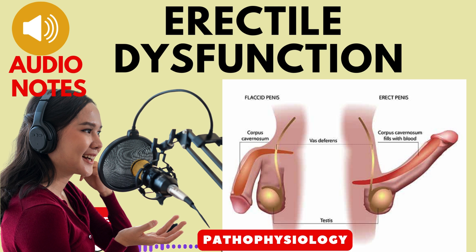Erectile dysfunction can be classified into two types: primary and secondary. Primary ED is rare and typically attributed to psychologic factors or clinically obvious anatomic abnormalities. Secondary ED, which develops later in life, is more common, with over 90% of cases having an organic origin. Psychologic factors play a crucial role in both types, contributing to the complexity of the condition.